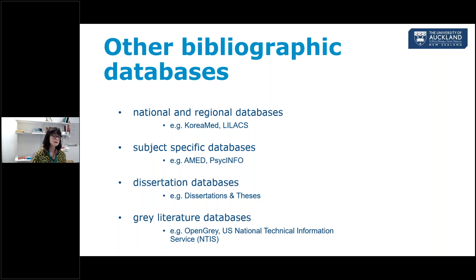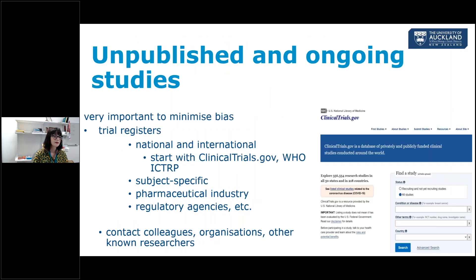Other bibliographic databases you might be interested in depending on your review scope include national and regional databases like KoreaMed and LILACS for Spanish and Portuguese language references. Subject-specific databases include AMED for complementary medicines, PsycINFO for psychiatry, and PEDro, which is a very good high quality database for physiotherapy. You need to look at dissertation databases for unpublished studies, grey literature, OpenGrey and ETHOS. It's also very important to search unpublished and ongoing studies to reduce selection bias or publication bias — where you might only find trials with positive results written in English with large sample sizes.